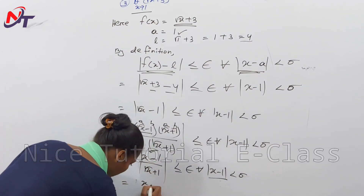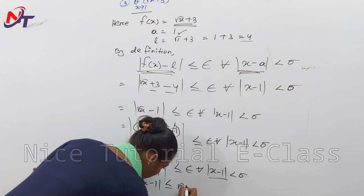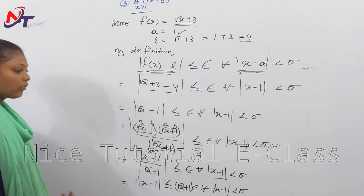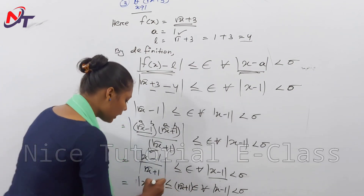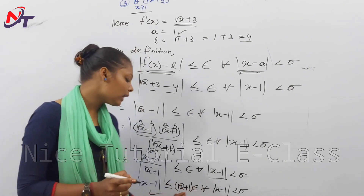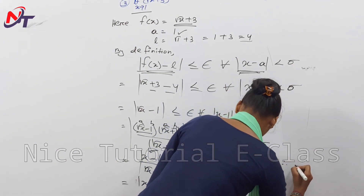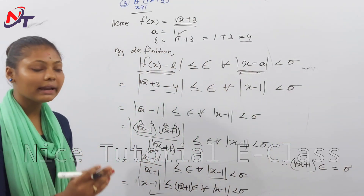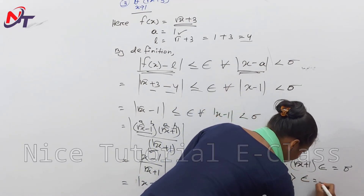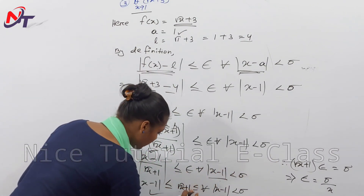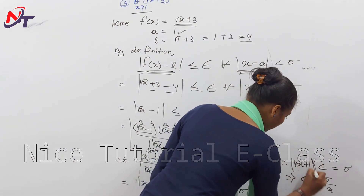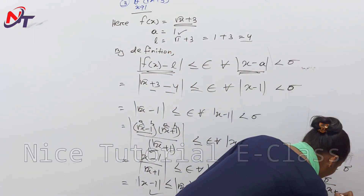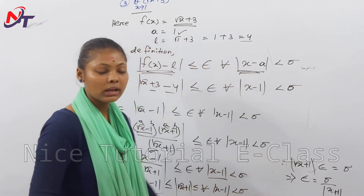So mod of x minus 1 divided by root x plus 1 is less than or equal to root x plus 1 times epsilon for all x minus 1 mod less than delta. Since f of x minus L equals x minus 1 divided by root x plus 1, we can set delta equal to root x plus 1 times epsilon. This completes the proof by the epsilon-delta limit definition.